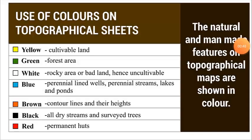Use of Colors on Topographical Sheets. The natural and man-made features on topographical maps are shown in color. Each color used on maps has its own significance. These colors are universally accepted, both for interpretation of survey sheets and map printing.